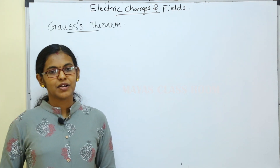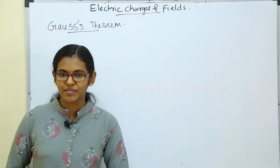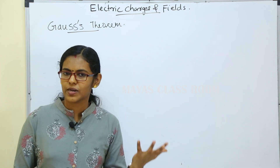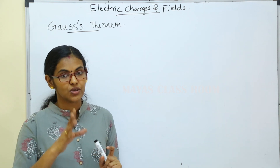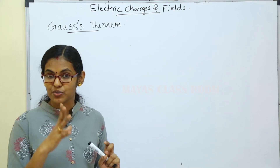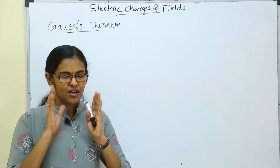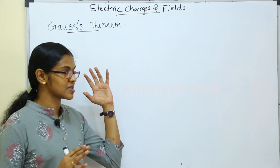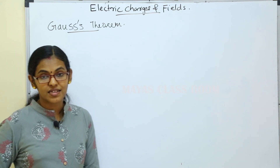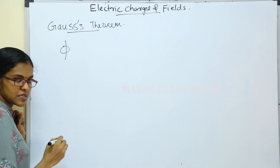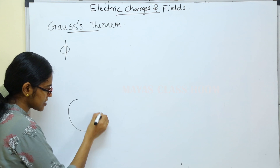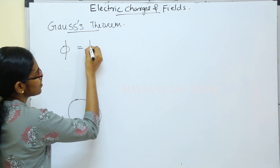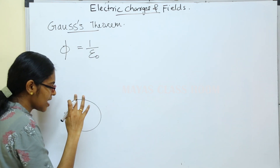Next, we will learn Gauss's Theorem. The statement of Gauss's theorem: the total flux over a closed surface is equal to 1 by epsilon-zero times the total charge enclosed by the surface.